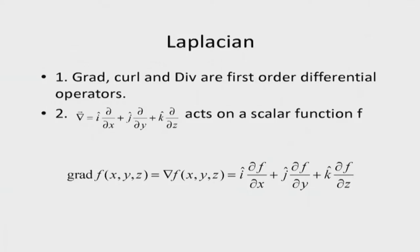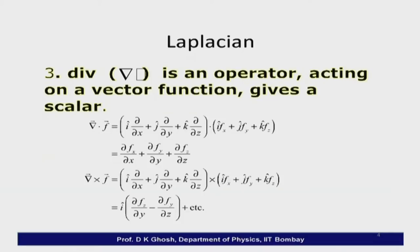Grad, curl, and divergence are all first-order differential operators. We define the del operator as: del = i(d/dx) + j(d/dy) + k(d/dz). When it acts on a scalar function, we call it grad. Divergence is del-dot acting on a vector function. The curl is similarly defined. These expressions you are all very familiar with.